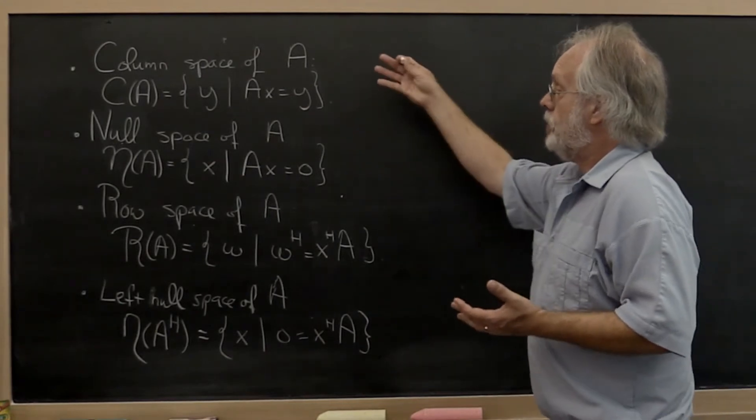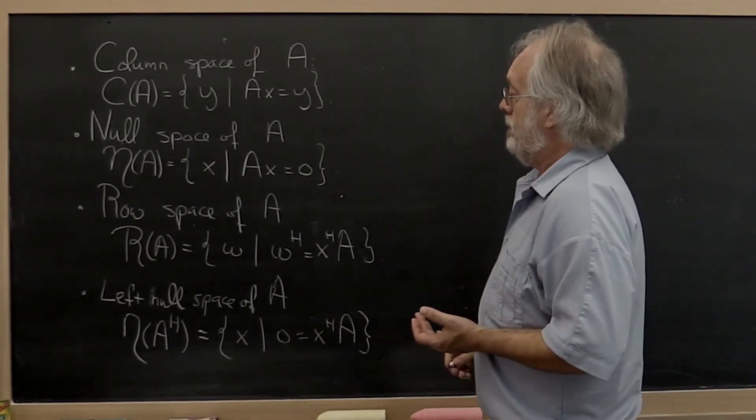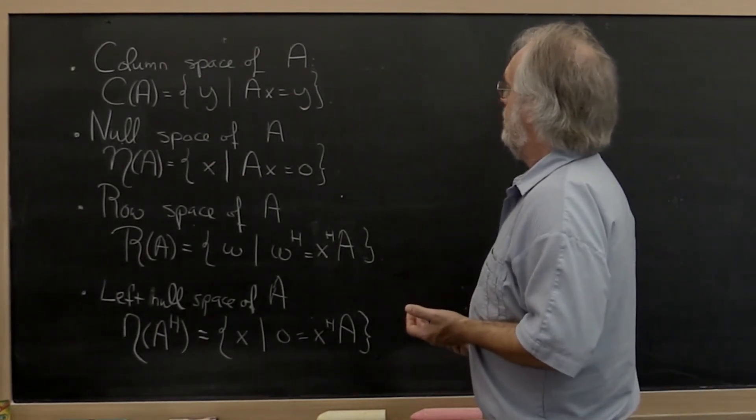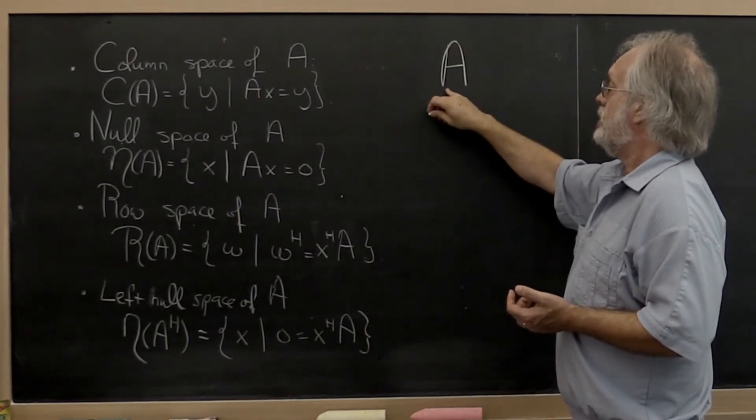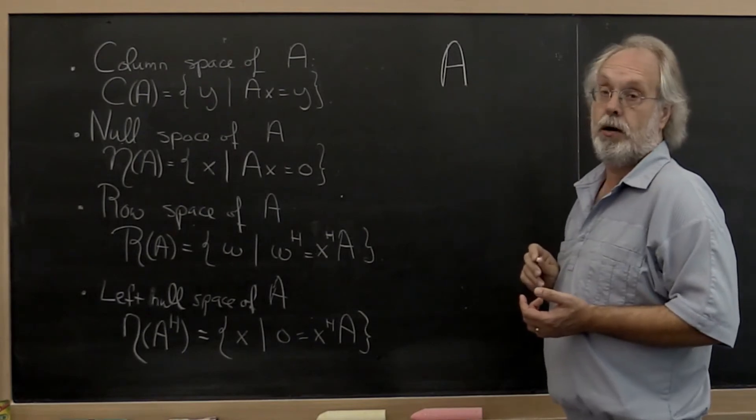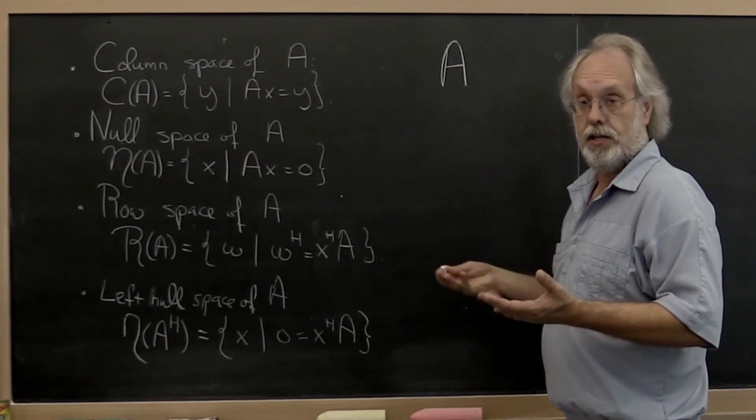At some point you learned about the column space of A. And what is the column space of A? Well, if you're given the matrix A, it is the set of all vectors that you can create by taking linear combinations of the columns of A, hence its name.